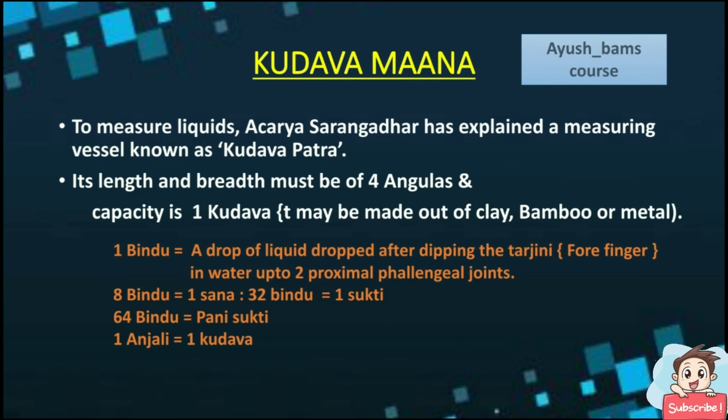The meaning of this is: we have to dip and take the measurement according to the lines made on our forefinger. On our forefinger or index finger, we can see there are 3 markings dividing it into 3 portions. We have to measure so that the first 2 portions are dipped in water — this is known as 1 Bindu. 8 Bindu equals 1 Sana. 32 Bindu equals 1 Supti. 6 Bindu equals Paani Supti. 1 Angeli equals 1 Kudava.